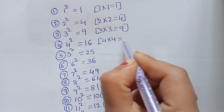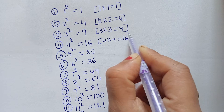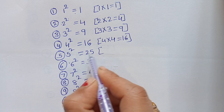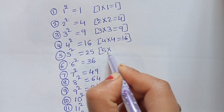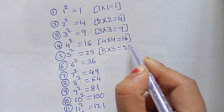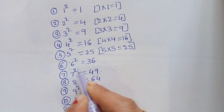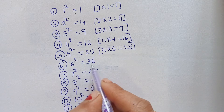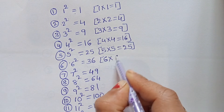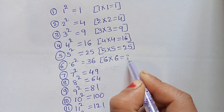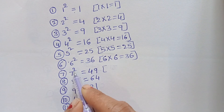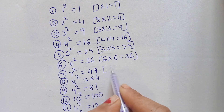Four into four equals to sixty-nine. Five square equals to twenty-five. Five into five equals to twenty-five. Six square equals to thirty-six. Six into six equals to thirty-six. Seven square equals to forty-nine.